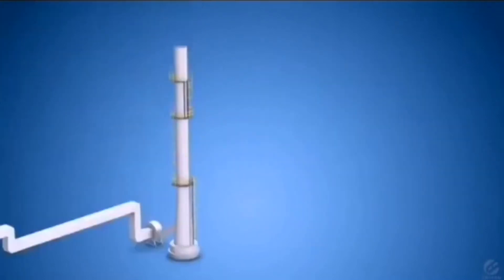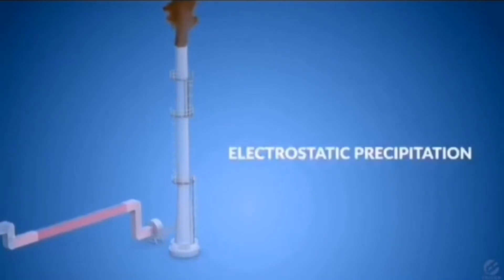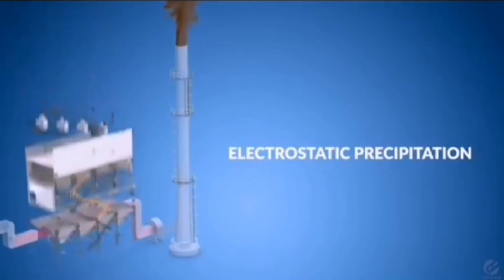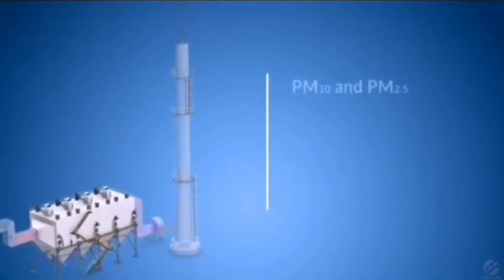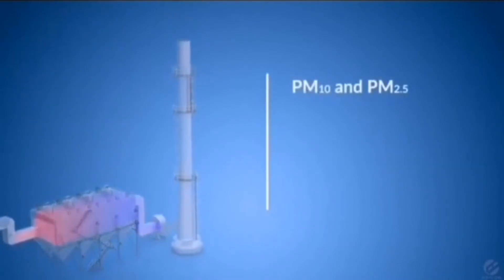Electrostatic precipitator is a very advanced air pollution equipment that works on the principle of electrostatic precipitation. It can capture even the finest of dusts.